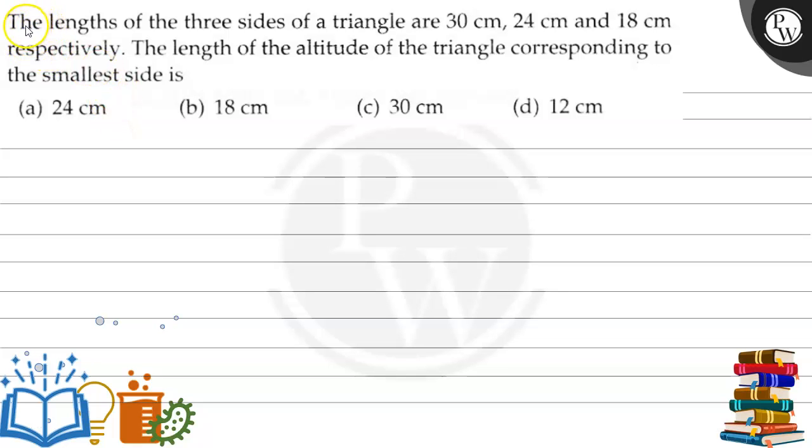Hello Achyo! Look at the question given. The lengths of the three sides of a triangle are 30 cm, 24 cm, and 18 cm respectively.